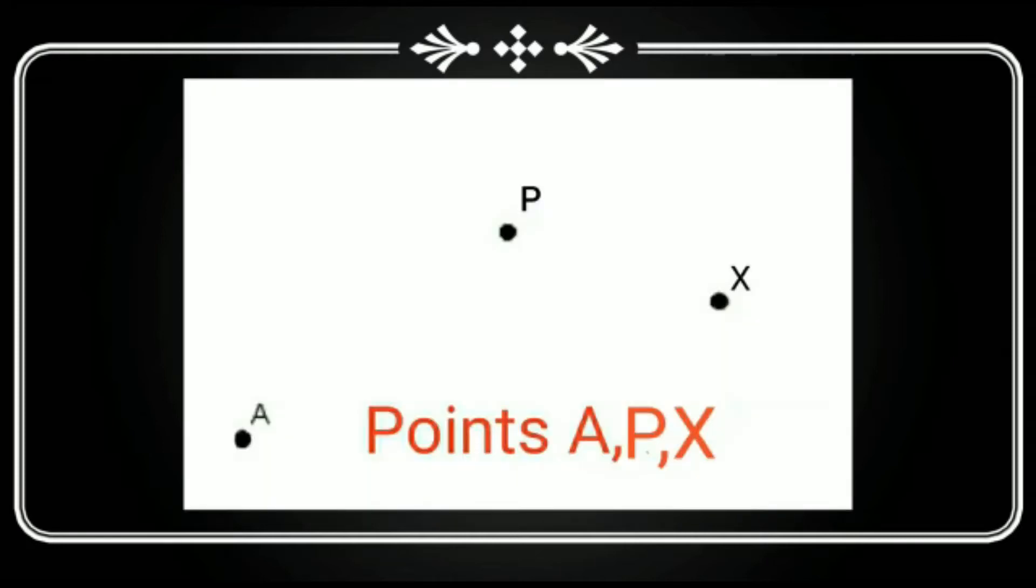A point in geometry is denoted by capital English letters like point A, point P, point X.